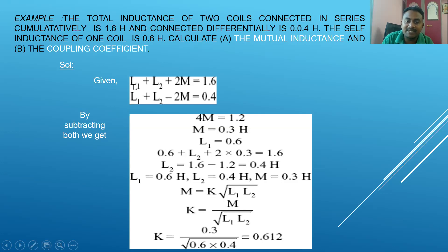For a series aiding circuit, the formula is L1 + L2 + 2M = 1.6. For series opposing (differential), the formula is L1 + L2 − 2M = 0.4. The inductance of one coil is given as L1 = 0.6 H.